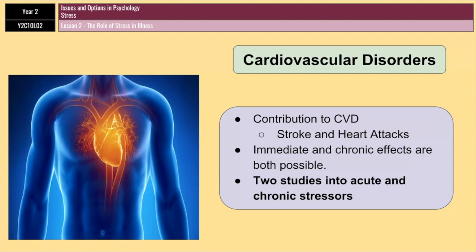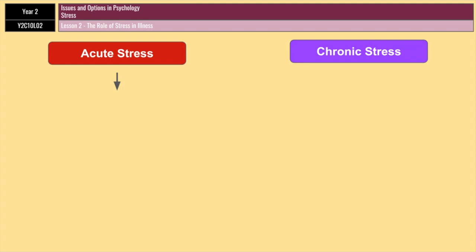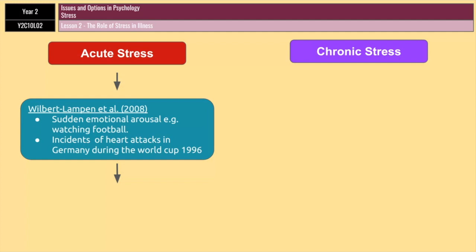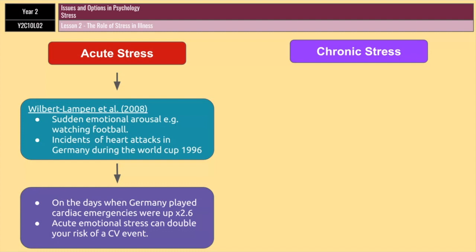The first study looks at acute stress. A good example of an acute stressor is sudden emotional arousal. Wilbert-Lampert et al. in 2008 looked at incidences of heart attacks during football matches played in Germany during the 1996 World Cup. They found that on days when Germany played, cardiac emergencies increased by 2.66 times compared with a control period. They concluded that acute emotional stress from watching your favorite football team can more than double your risk of suffering a cardiovascular event.